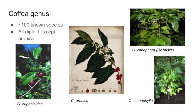To start off, let's talk about Coffea, the genus. The Coffea genus hosts about 100 known species, all of which are diploids except for arabica. I'll talk about what a diploid is later in this video. Here I'm showing four different varietals of Coffea that you may have encountered. In the middle is Coffea arabica, which is the species most commonly produced and used for specialty coffee.